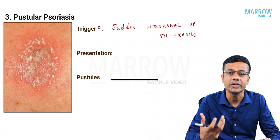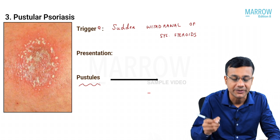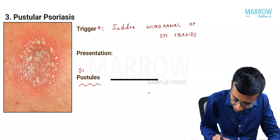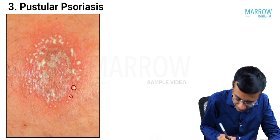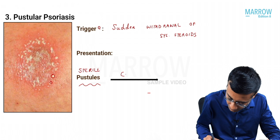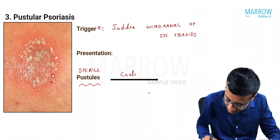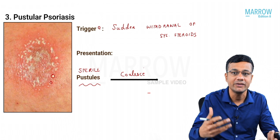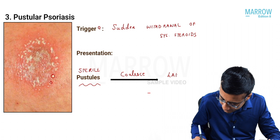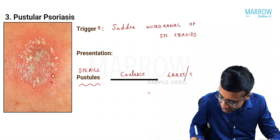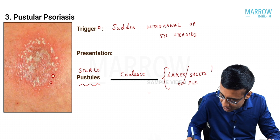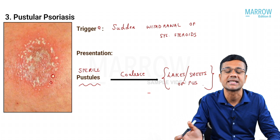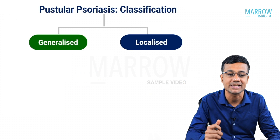How do patients present in pustular psoriasis? There will be multiple pustules. They are called sterile pustules because they do not contain bacteria. These pustular lesions will coalesce and join together to form lakes or sheets of pus. Be on the lookout for this term — 'lakes or sheets of pus' typically means the examiner is asking about pustular psoriasis.